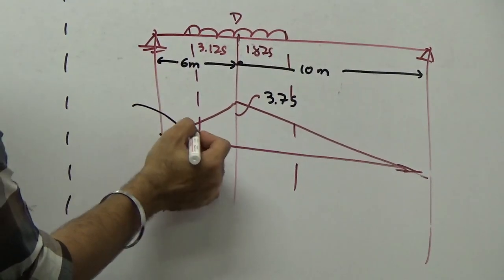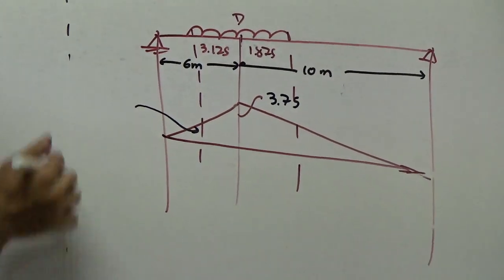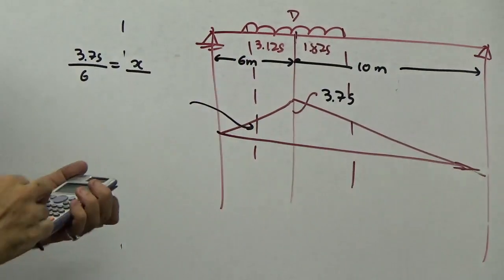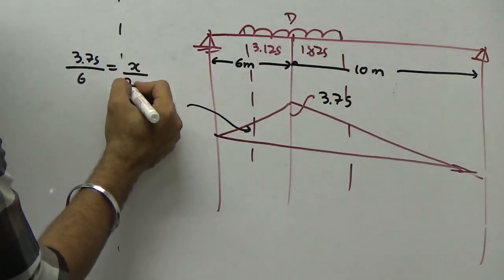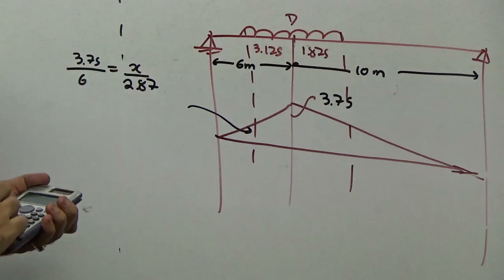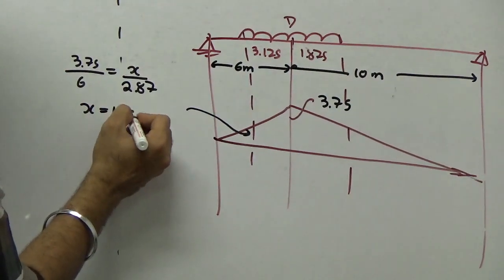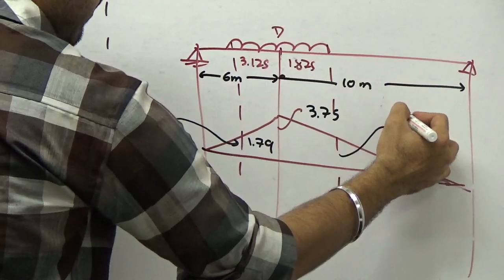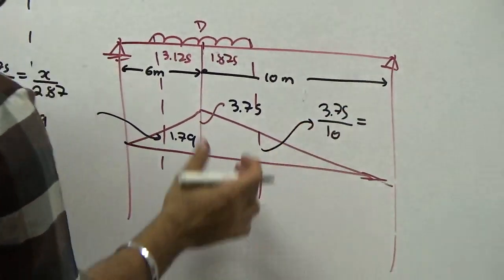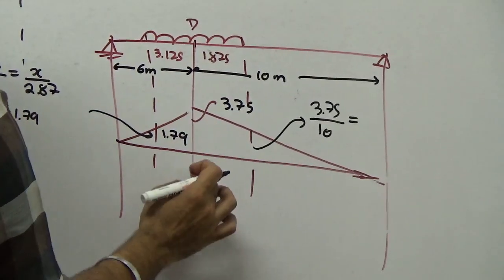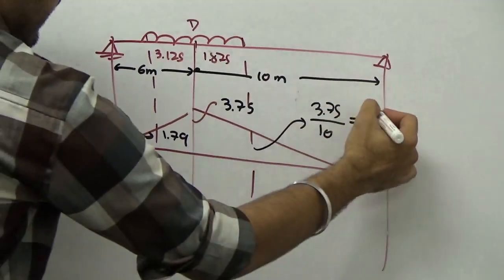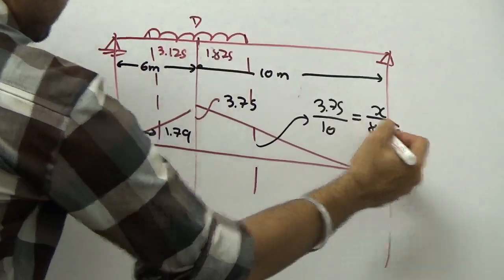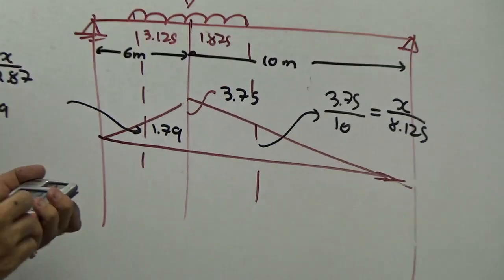The left-end ordinate: 3.75/6 × (6 - 3.125) = 3.75/6 × 2.875 = 1.79. The right-end ordinate: 3.75/10 × (10 - 1.875) = 3.75/10 × 8.125 = 3.04.